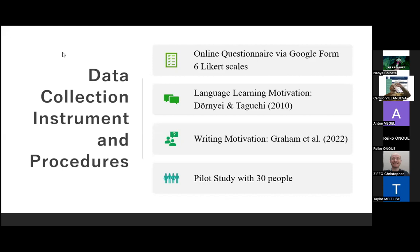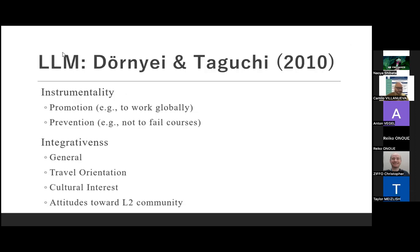For data collection instruments and procedures, students took an online questionnaire via Google Forms. The questionnaire had six Likert scales. For language learning motivation I adopted Dörnyei and Taguchi, and for writing motivation I adopted Graham et al.'s survey questionnaire. Before that, I piloted the survey questionnaire with 30 people, and all criteria had high reliability.